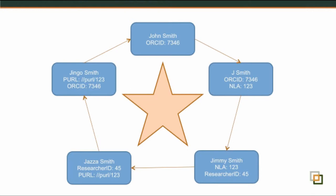In the example I've got on the screen, we've got five records displayed. The very top record and the top left record — Jingo Smith and John Smith — do share the same identifier. But John Smith doesn't necessarily share the same identifier as Jazza Smith down the bottom left-hand side. However, because across those records they are identified using shared identifiers, we can actually assert that they are talking about the same person. And as we work our way around the five records, we can work out that all five records are talking about the same party.